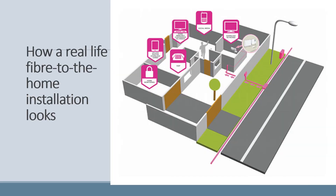This is how a real-life fiber-to-the-home installation looks. You can see the fiber connection in the street, which comes into your house. On a wall somewhere in your house you'll have your client premises equipment — a little white box — that connects to the fiber. That's all for today. There is a part B to this topic, so please watch that as well.